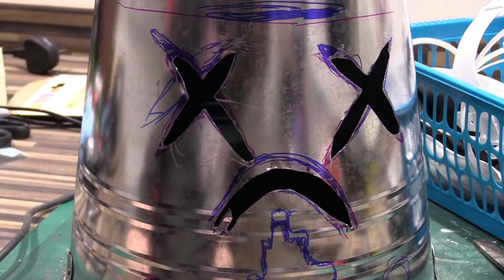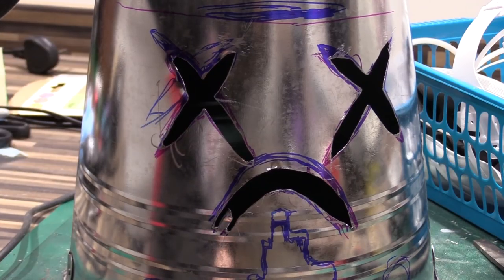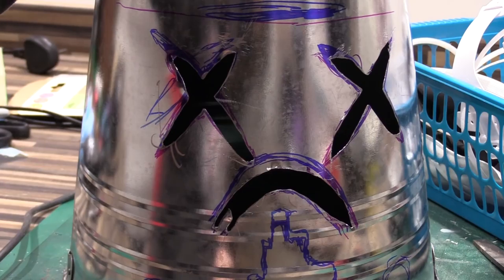And then what we've got to do is we've got to rough everything up and then finish sanding that down so it's nice and smooth. Then we can paint this.